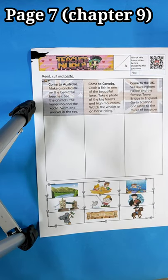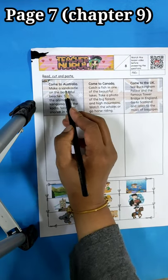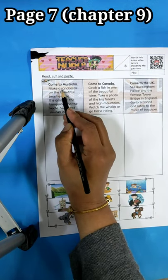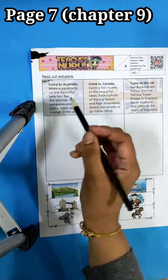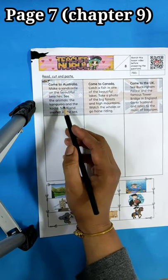look for the keywords at the same time. So we have make a sand castle. The keyword is sand castle on the beautiful beaches. See the animals, the kangaroo. So kangaroo is the keyword and the koala.